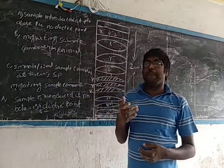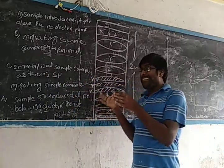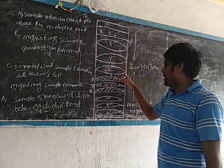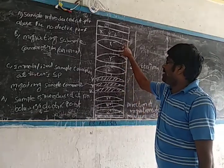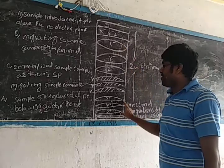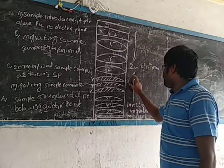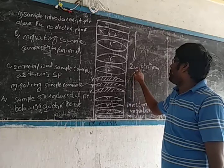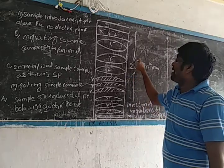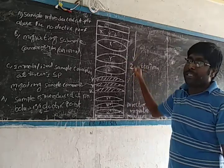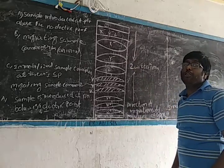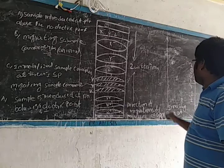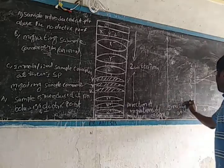When the pH is below the isoelectric point, we get a positively charged sample component, and electrons migrate. We can obtain a positive charge on the molecule. Once electrons migrate and the endpoint net charge is zero, we can determine the isoelectric value.